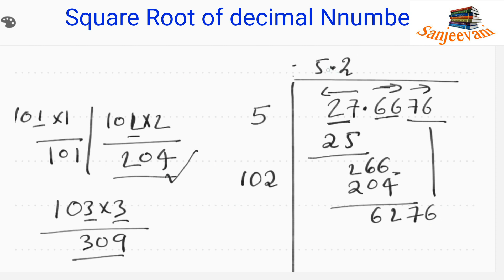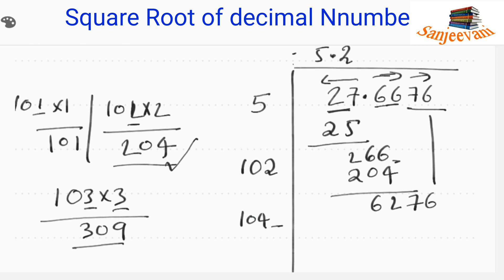We drop the last pair, which is 76, giving us 6276. Now we double the current result 52, which gives 104. We write 104 here and need to place a digit alongside it to multiply with itself.